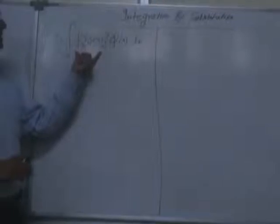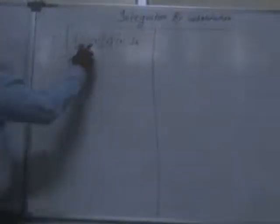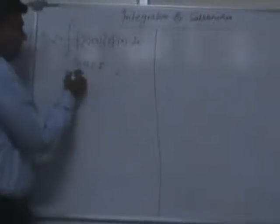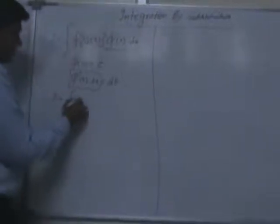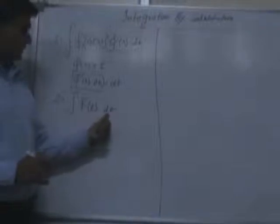In this tutorial we will discuss integration by substitution. We use this method for complex or composite functions where a function f has a substitute phi(x) available whose differentiation is also present in the integrand. We put phi(x) equal to t, differentiate to get phi'(x) dx equal to dt, and replace these in the original integral to get the integral of f(t) dt, which is easier to evaluate.